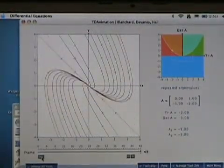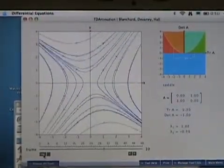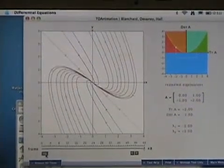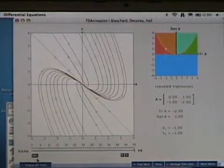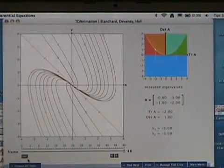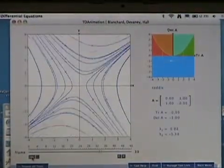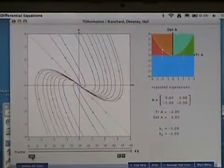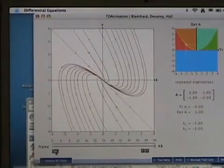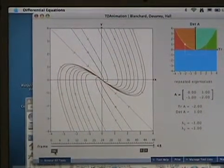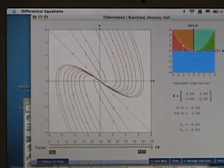You can run it ahead one step at a time. You can see it changing from essentially a spiral sink to a center to a spiral source to a real source to a saddle point back to a real sink before it gets back into repeated root parabola at the very end, where you've just got one real eigenvalue that's repeated and one line of eigenvectors, one line of straight line solutions at the beginning and end.